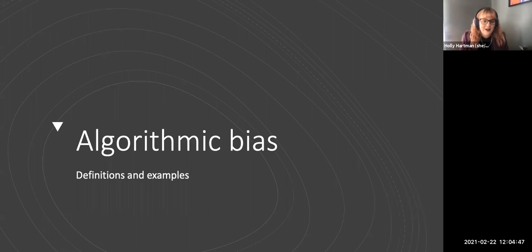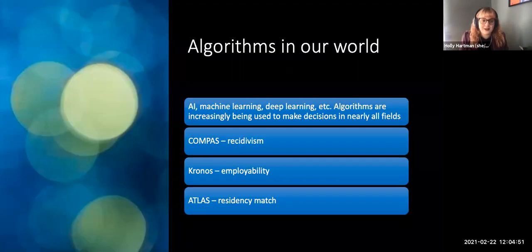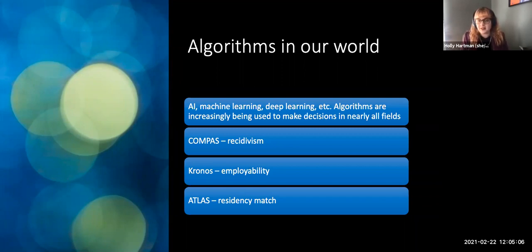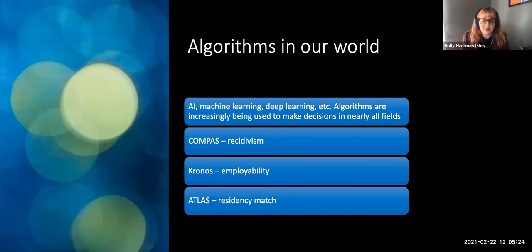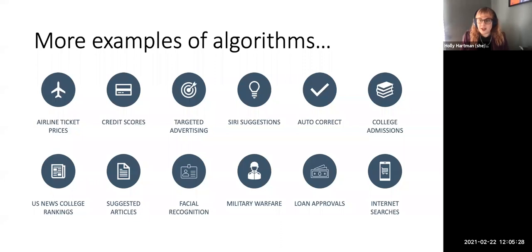Let's get started. First, let's talk about what exactly algorithmic bias is. In our world, algorithms are becoming increasingly more common. It goes by different names — AI, machine learning, deep learning — and they're being increasingly used to make decisions in basically all fields of our lives. I'm going to be talking specifically about three: one looking at recidivism, one looking at employability, and one which has become a hot topic recently, the Atlas program used by Tulane.